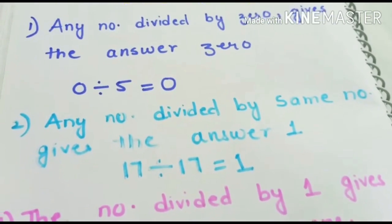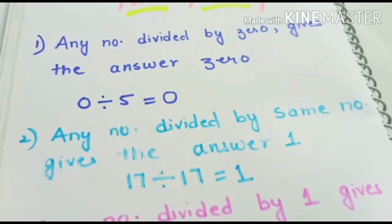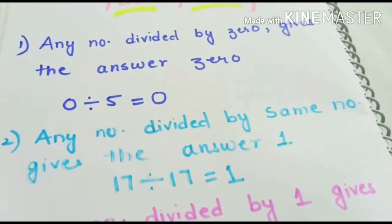The number 2 fact is, any number divided by the same number gives us the answer 1. I have taken an example of 17 divided by 17 equals to 1.